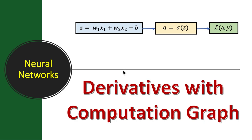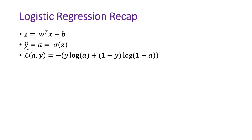Now that we have a good understanding of the computation graph and logistic regression, we are ready to use the computation graph for calculating the value of the loss function and its derivative for logistic regression. As a brief recap: we calculate y-hat, an estimate of y, which is the probability of actual y being equal to 1 given some x. We want y-hat to be as close to y as possible.